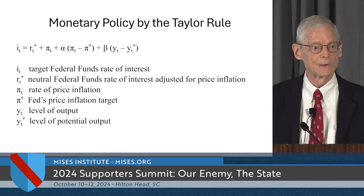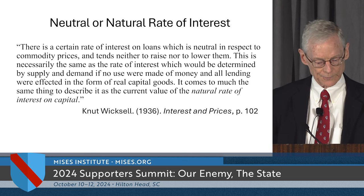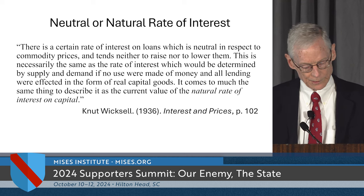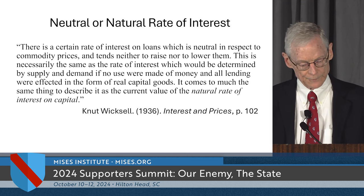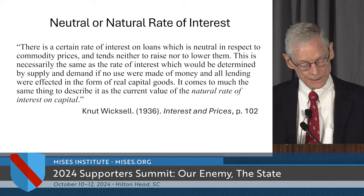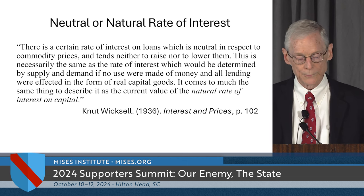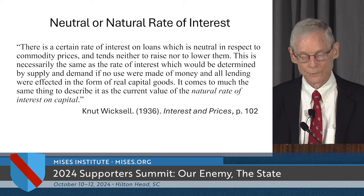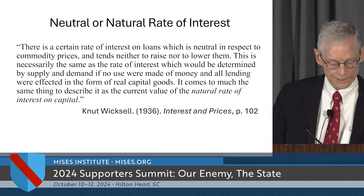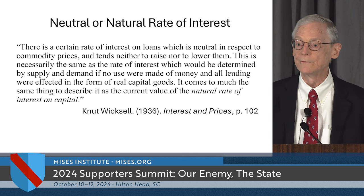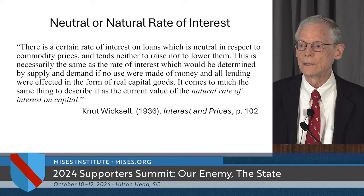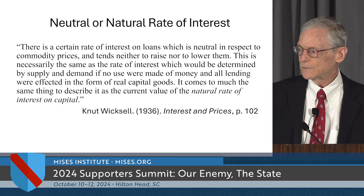Where does this idea come from? The idea of the neutral rate comes from Wicksell, and this is what Wicksell wrote in his book Interest and Prices: 'There is a certain rate of interest on loans which is neutral in respect to commodity prices and tends neither to raise nor lower them. This is necessarily the same rate of interest which would be determined by supply and demand if no use were made of money and all lending were effected in the form of real capital goods.' So this is a rather odd concept — he's saying that if loans were in real physical capital goods, we would see manifested in those rates this neutral or natural rate of interest.